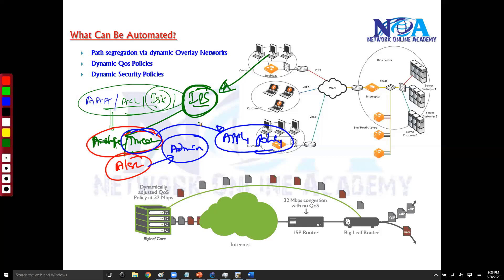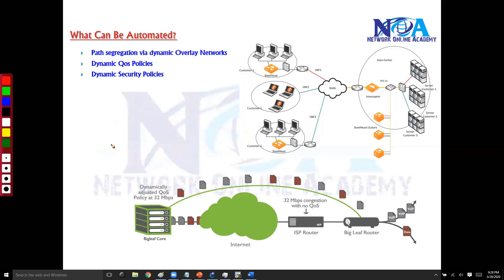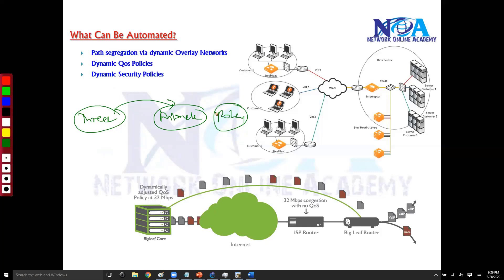With network automation, we can automate security policies — telling the system that if a specific threat is detected, automatically apply the corresponding policy without manual intervention. Dynamic policies are pushed to network devices based on traffic analysis and identified threats. The static policies remain on the devices; dynamic policies are added on top based on specific requirements at a given point in time, applied to devices like Cisco ISE servers or IPS.